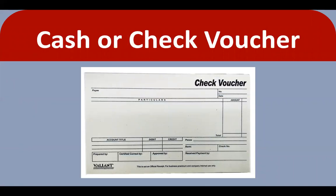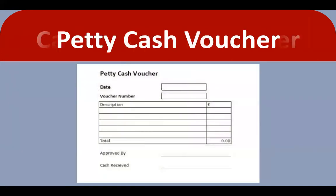Cash or check voucher: this document is prepared when paying a supplier, a customer for refunds, employees for salaries or advances, or other creditors for operating expenses and loans. Prior to the release of a check, a cash voucher must be prepared. Petty cash voucher: this is prepared when the firm has a petty cash refund for small expenses. A revolving amount is set aside for this purpose, and a disbursement is liquidated when the fund is almost depleted. The releasing of petty cash is assigned to one person who must ensure that an approved petty cash voucher is presented before cash is released.